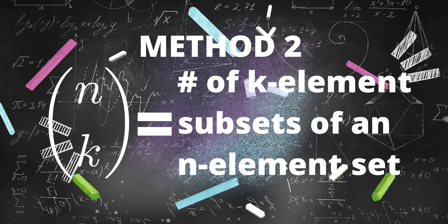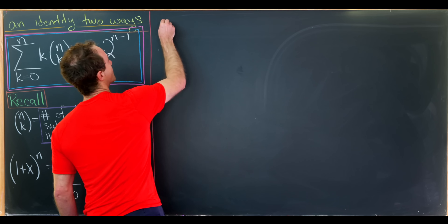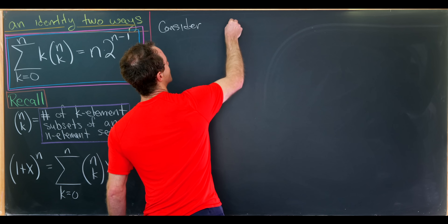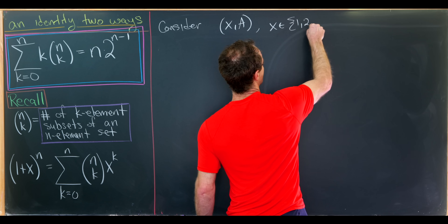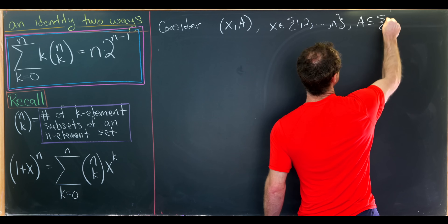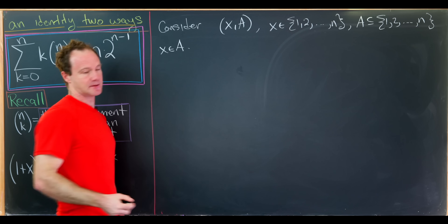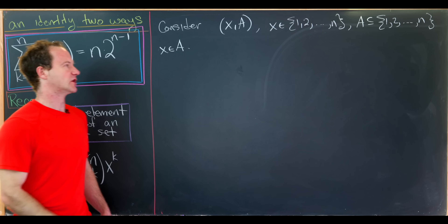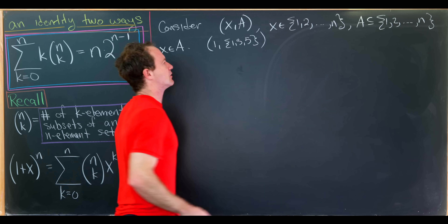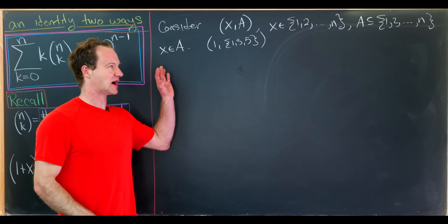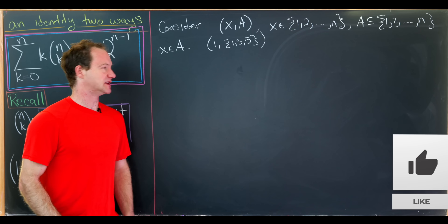Now I want to look at a combinatorial argument that uses our first definition for binomial coefficients. We'll consider ordered pairs of the following form: x comma a, where x is an element of the set containing 1, 2, up to n; a is a subset of the set containing 1 up to n; and x is an element of a. One example of such an ordered pair would be 1 comma {1, 3, 5}, since {1, 3, 5} is a subset of {1, ..., n} for large enough n, and 1 is an element of that subset.